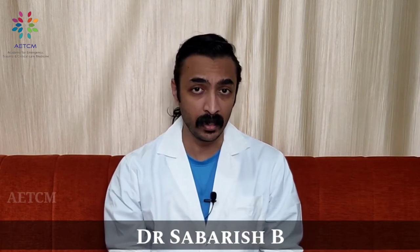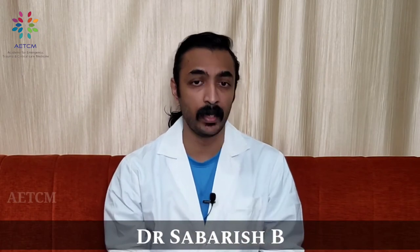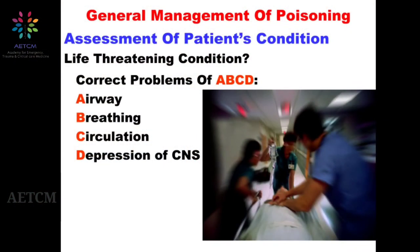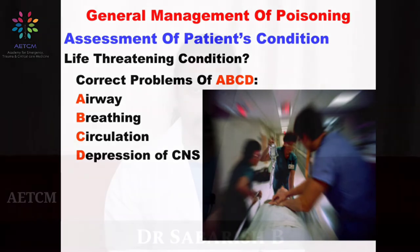A life-threatening condition can mean the patient might be in a cardiorespiratory arrest, and then of course you move on with the resuscitation upfront. The assessment begins with the classical A, B, C, and D — A for airway assessment and management, B for breathing, C for assessment and management of circulation, and D for any depression of CNS. We will cover the various aspects of what and how we assess each.